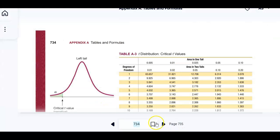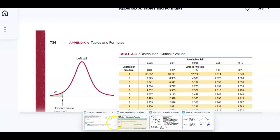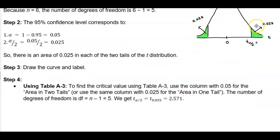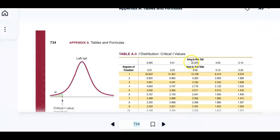Here is our table. We said that the area in two tails is 0.05. Let's confirm that. If we add those together, that gives us 0.05, so the area in two tails represents 0.05. And the area in one tail would be 0.025. The area in one tail is 0.025, and the area in two tails is 0.05.